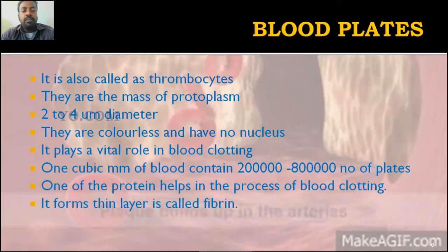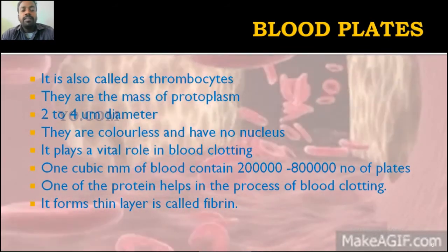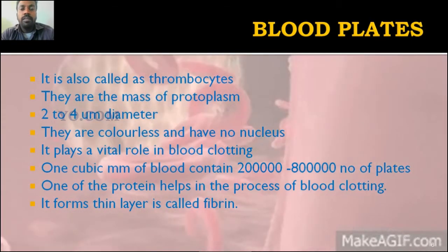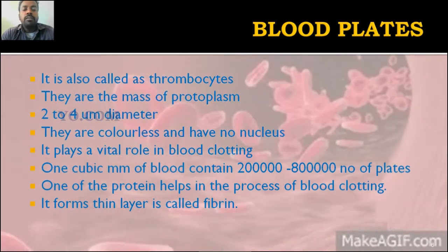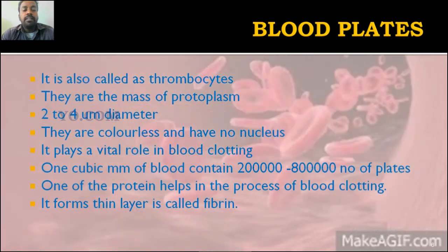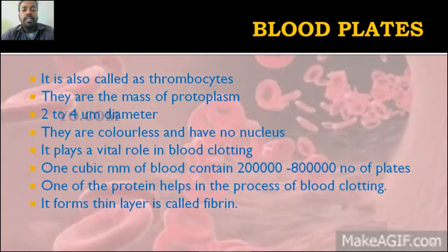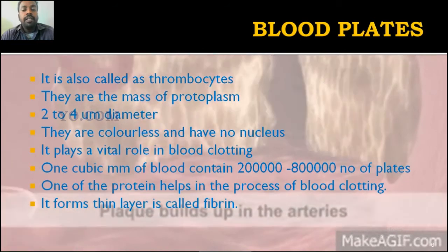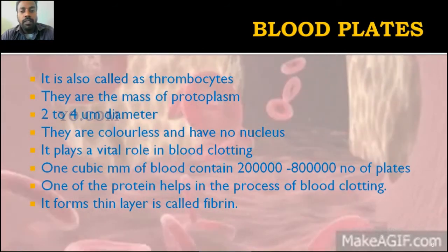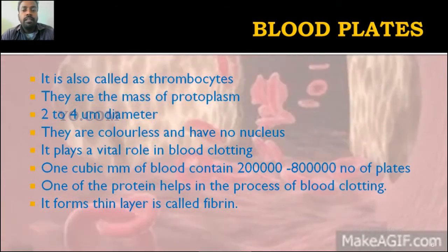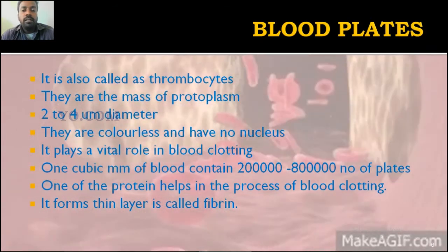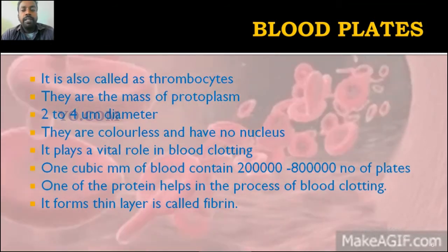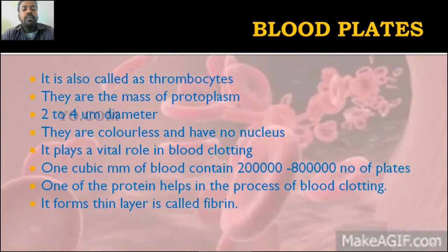Blood platelets are also known as thrombocytes. They are a mass of protoplasm. The diameter of blood platelets is two to four micrometers. They are colorless and have no nucleus — of the three blood cell types, only white blood cells have a nucleus. Platelets play a vital role in blood clotting.